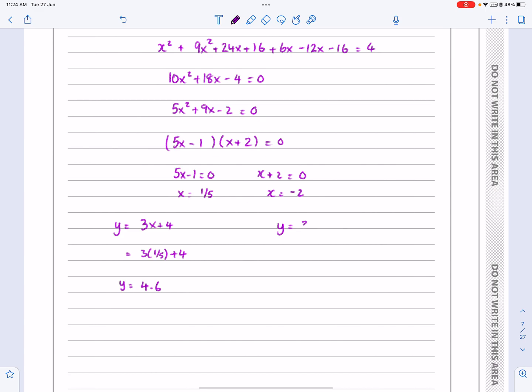And if y = 3x + 4, we get y = 3(-2) + 4, so that works out to be -2.